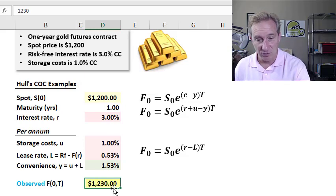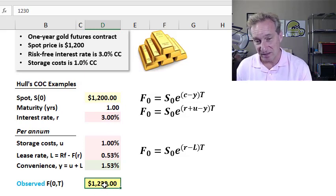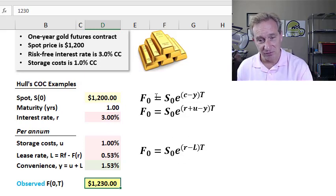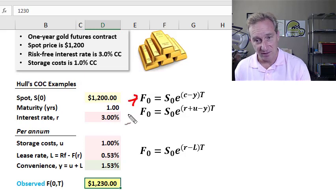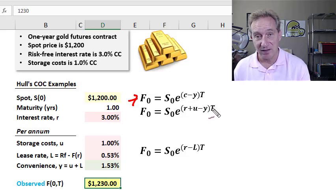But what we do need for the convenience and lease rate is an observed futures price. So I'm just assuming $1,230, and you can see it's a hard input. It's not solved for the model because I need the price in order to infer the convenience and lease rate. Another way to think about this is we're using this model, but the forward price becomes an input and the output becomes the lease rate and the convenience yield. So here's my general form of the cost of carry.